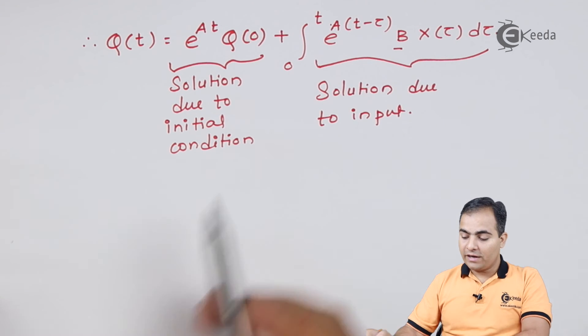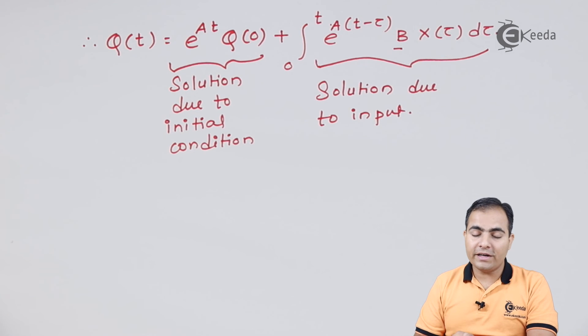Now this is our solution, but in this solution there are two terms. The first term is obtained due to initial condition and the second term is obtained due to this input condition. And e to the power At, this e to the power At is nothing but my state transition matrix.